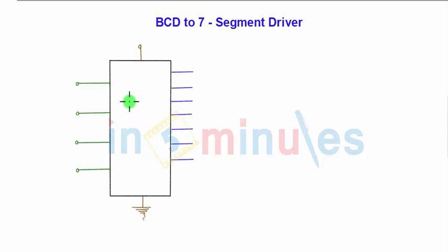So here we have two drivers. We will see one by one a common anode display driver and common cathode display driver. Starting with the BCD to 7 segment decoder. We have here BCD to decoder or the driver, that is nothing but IC 7447.